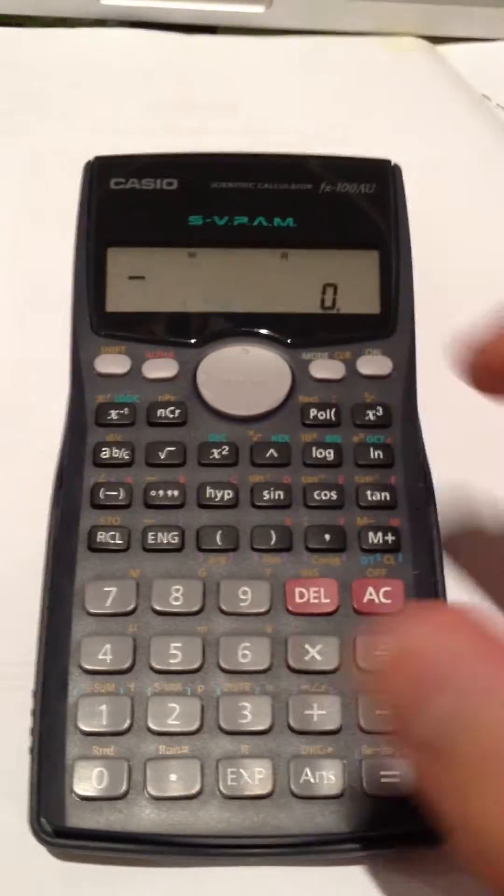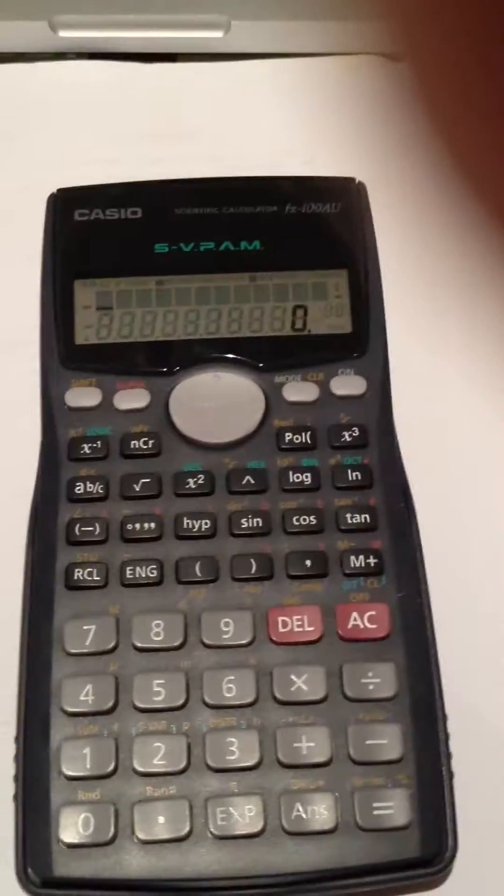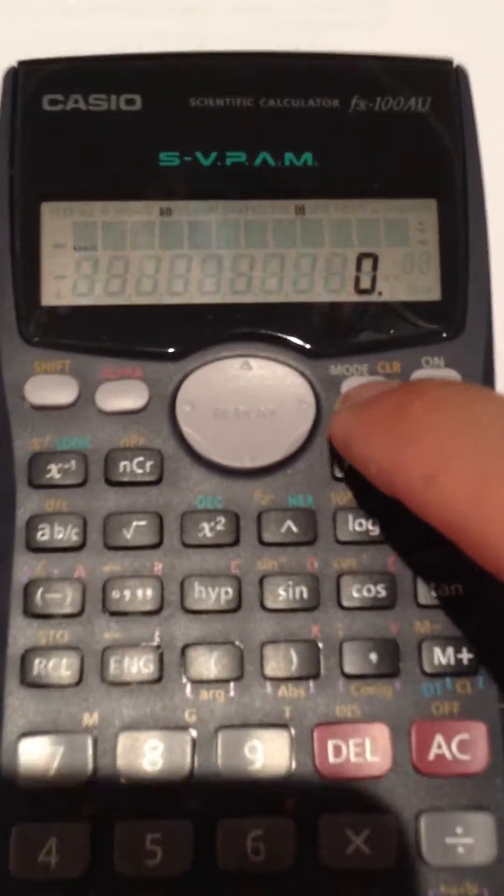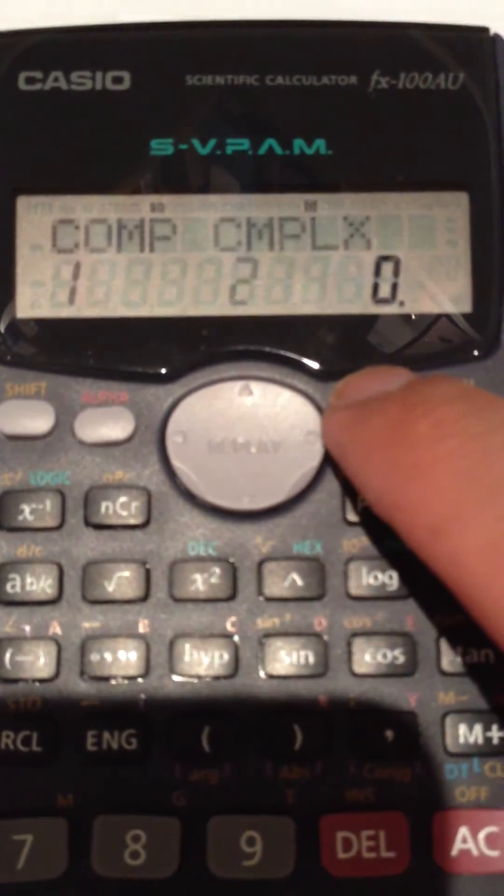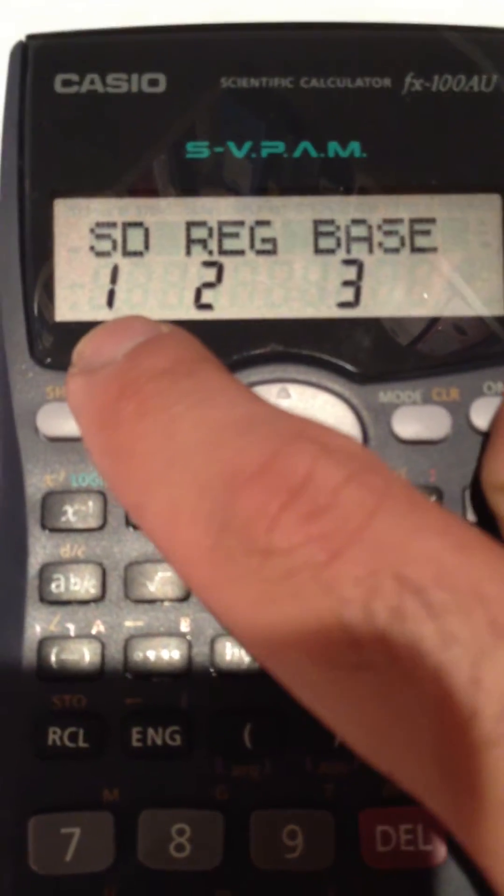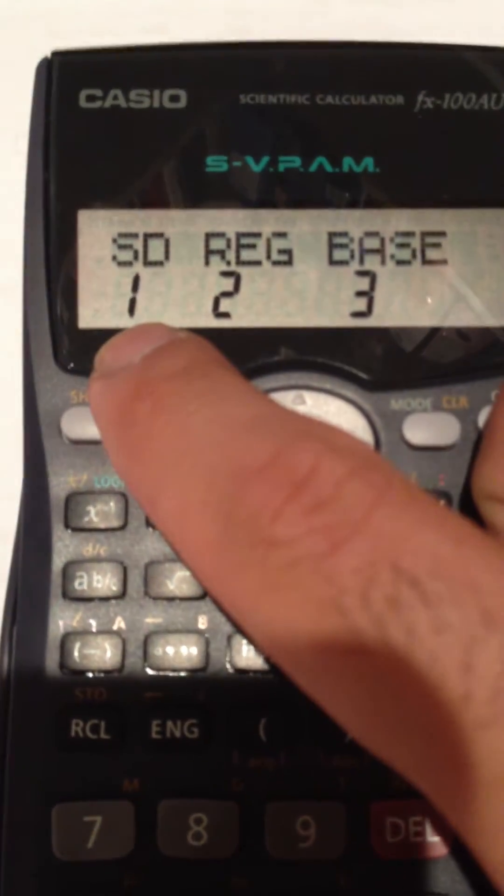First, hit the on button. When the screen is on, press the mode key twice - one, two - and you see SDAP. That's the statistics mode.